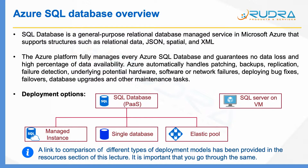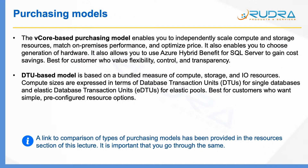I think it is very important for you to go through that and understand the differences in detail. The next thing is Purchasing Models. There are two ways you can purchase SQL Server on Azure. The first one is the vCore Purchasing Model, which is relatively new when compared to the DTU-based model. In the vCore-based Purchasing Model, you can independently scale compute and storage resources, match on-premises performance, and optimize the price.